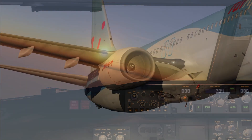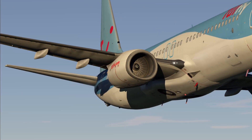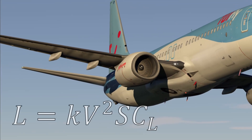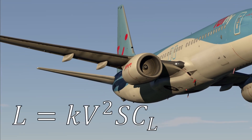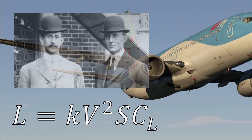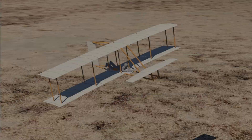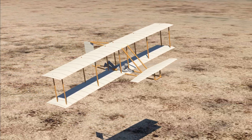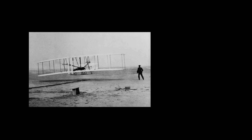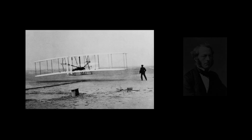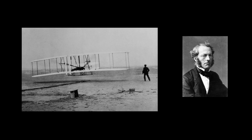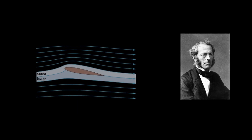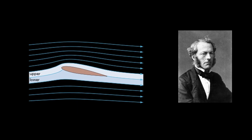The lift equation's older ancestor is a formula which was used by the Wright brothers to design the world's first ever motor-operated airplane. By the time the Wright brothers started their studies, scientists were already hard at work trying to figure out what determines the amount of lift an object produces.